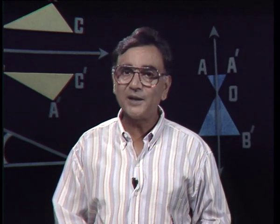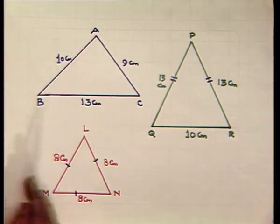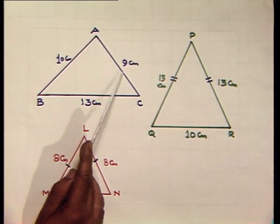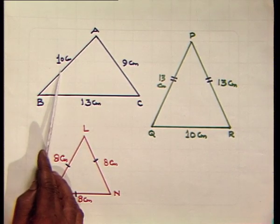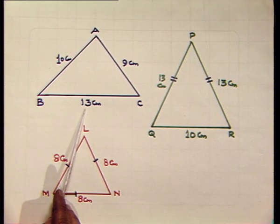A triangle is a polygon with the least number of sides, and a triangle is always recognized by its sides. Let us see these triangles. Here, triangle ABC has sides 9 centimeters, 10 centimeters, and 13 centimeters — that is, the length of all the sides is different. So such a triangle is called a scalene triangle.